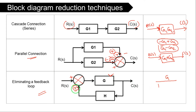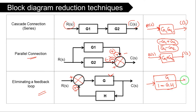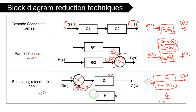Specifically, if the feedback is positive, the resultant block is G divided by (1 minus G·H). If the feedback is negative, the resultant block is G divided by (1 plus G·H). This is the resultant transfer function for elimination of a feedback loop.